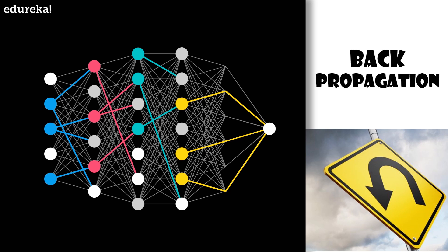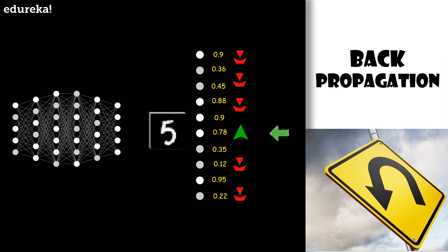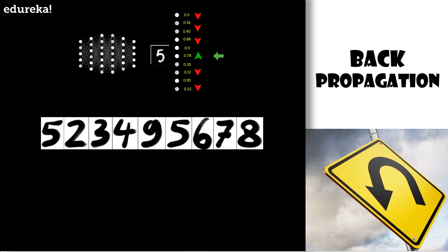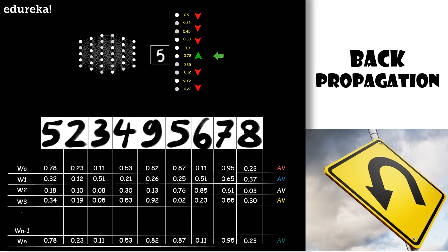Remember that this is all just how a single training example wishes to change each of those weights and biases. This network can only classify a 5 as it is changing its value to classify a 5 better. So what you do now is go through the same back propagation routine for every other training example, recording how each one of them would change the weights and biases, and you average together those weights and the desired changes.